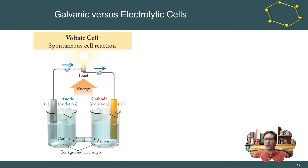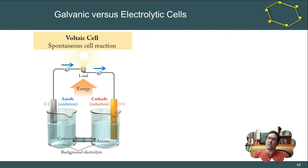For a voltaic cell, under normal conditions, electrons flow from the anode to the cathode, and the background electrolyte allows charge to balance out — that is an effective battery with a measurable voltage. The actual voltage is dependent on the composition of the cell: each half-reaction has a standard reduction potential, and from those values we can calculate the voltage of the cell.